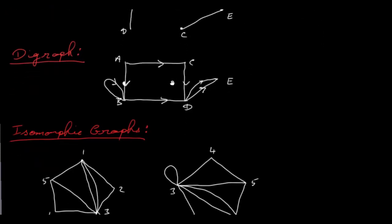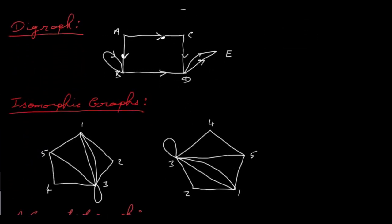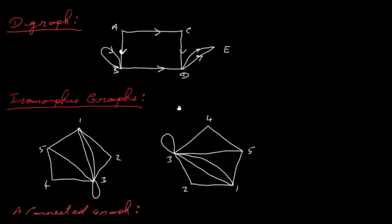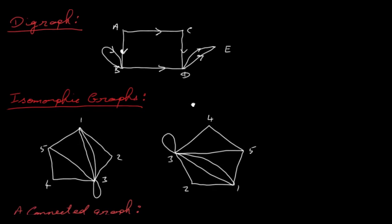Next we have digraphs. Digraphs are graphs where each edge has an arrow on it indicating a particular direction. You can have loops and multiple edges here, but the edges in digraphs are called arcs. From A to C, for example, this would be an arc. You can also have a simple digraph where there are no loops or multiple arcs. The arrows could represent one-way systems in towns, or predatory habits of animals — for example, A would eat C, C would eat D, and so on. It varies from context to context.